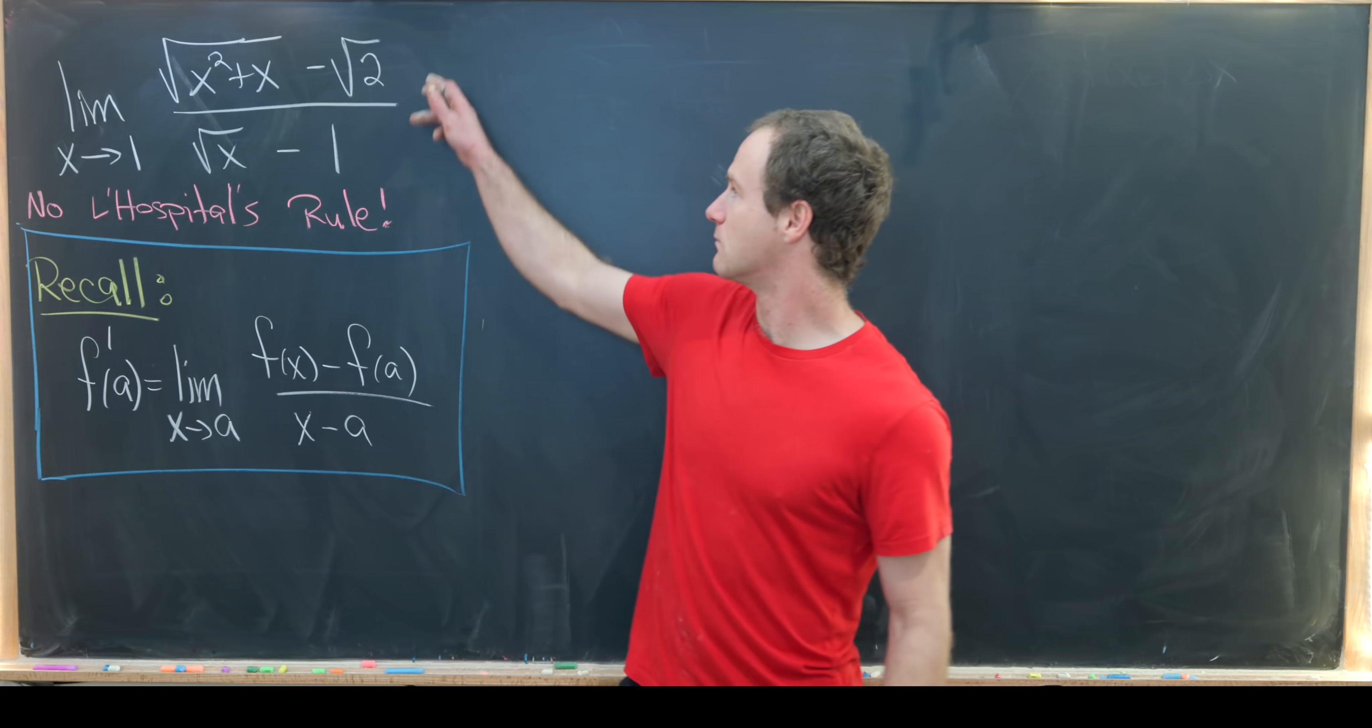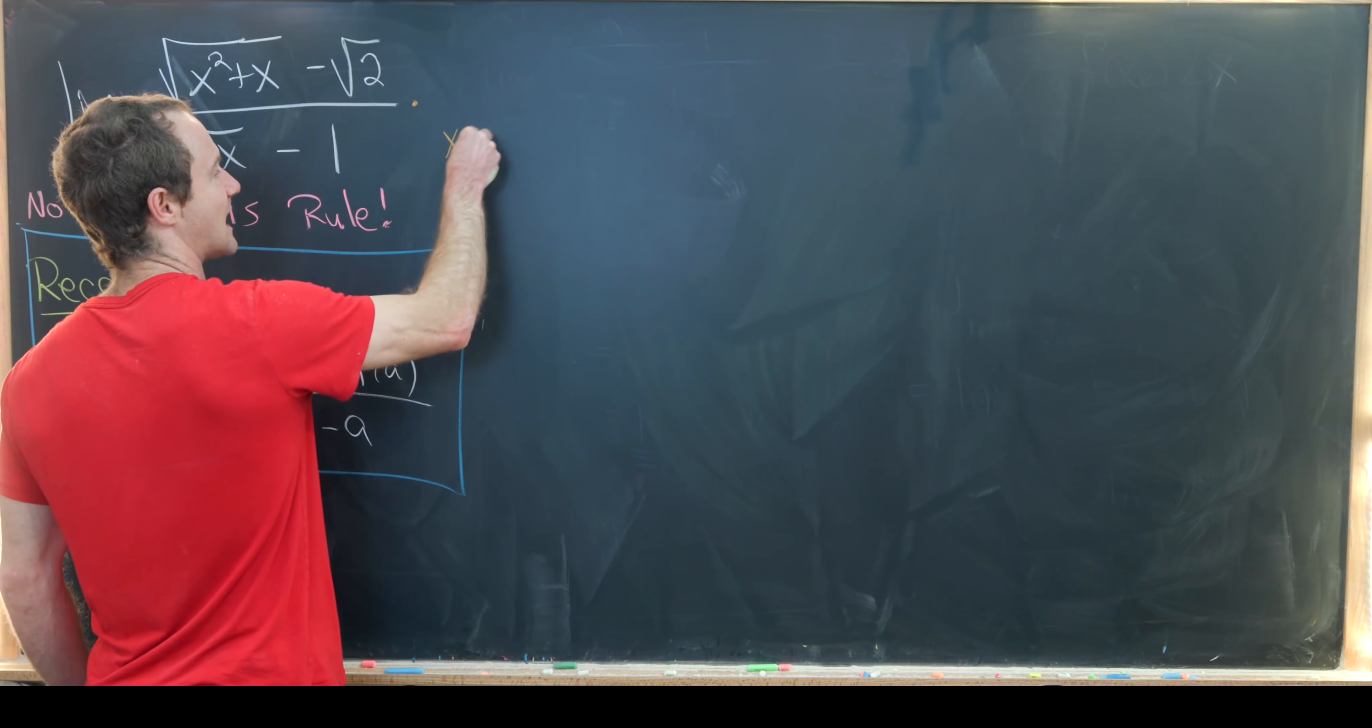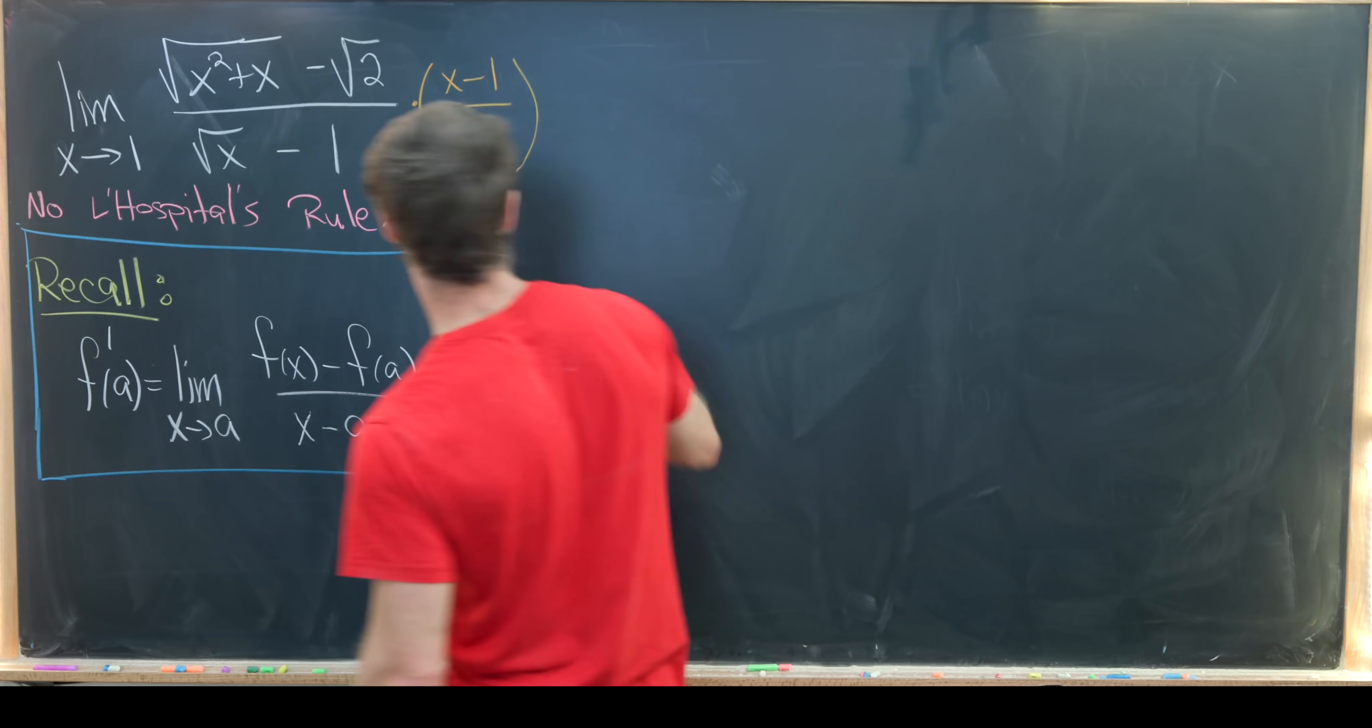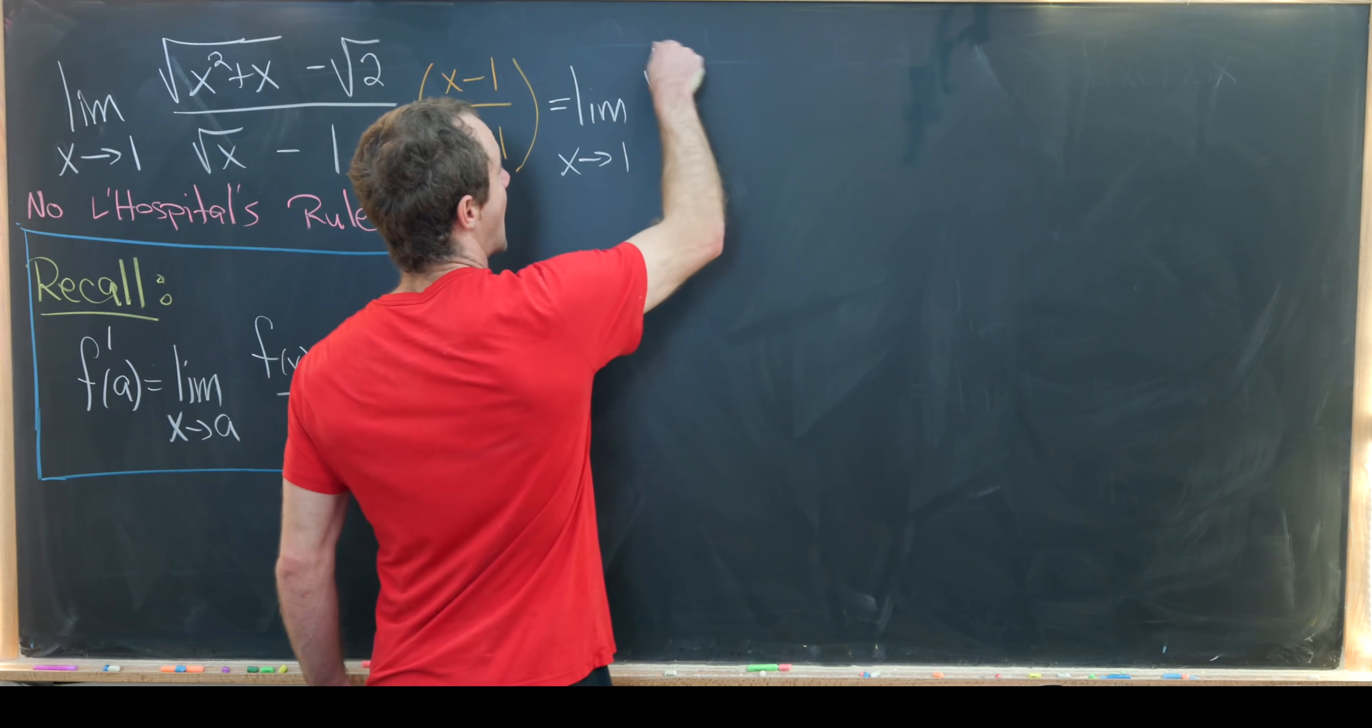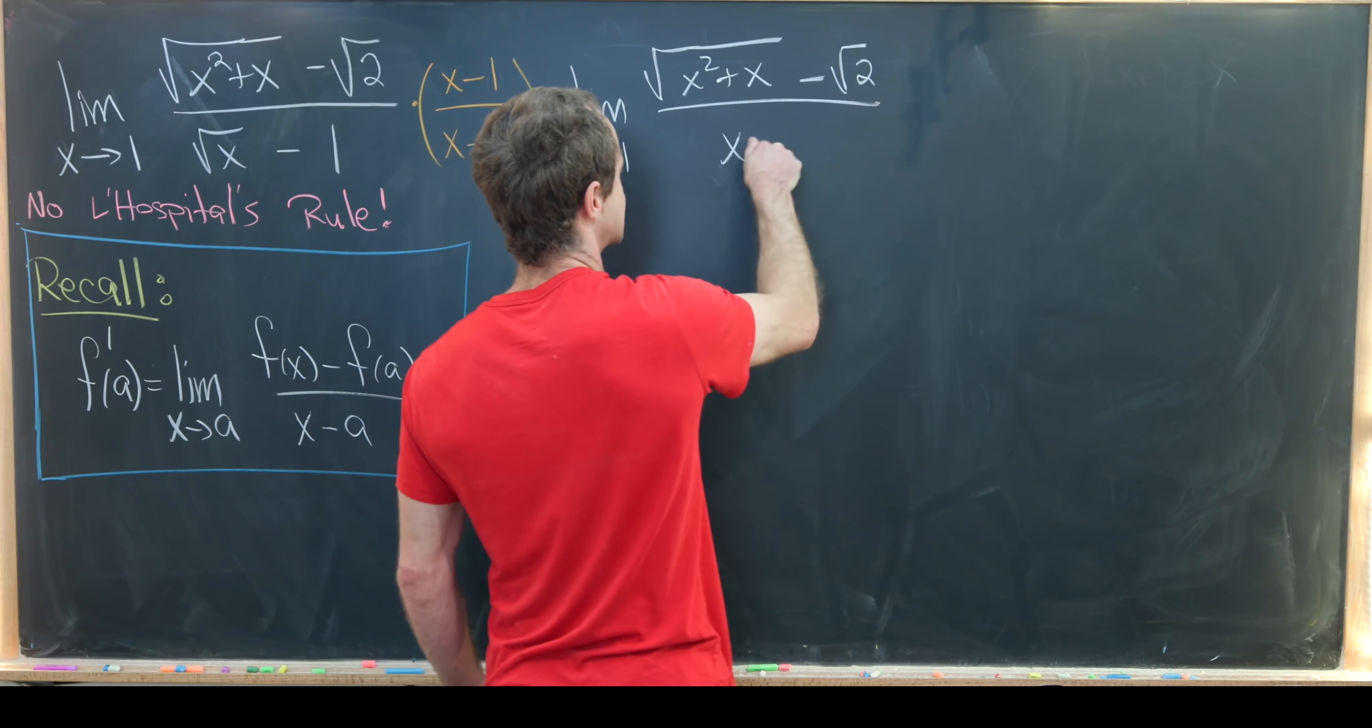But maybe we can multiply this by some version of 1 in order to get it in the right form. And that's exactly what we're going to do. Let's take this and multiply it by x minus 1 over x minus 1. So what is that going to turn this into? We'll have the limit as x goes to 1 of our square root of x squared plus x minus square root of 2 over x minus 1.